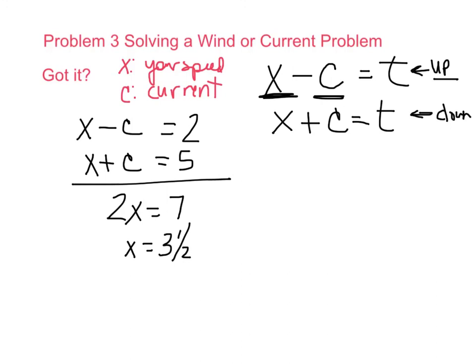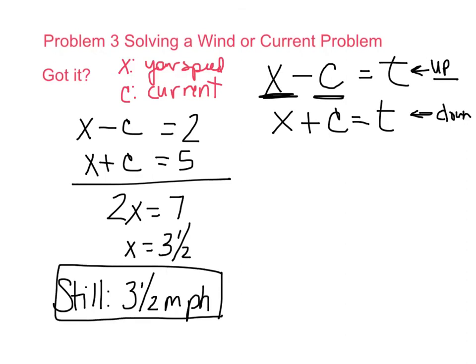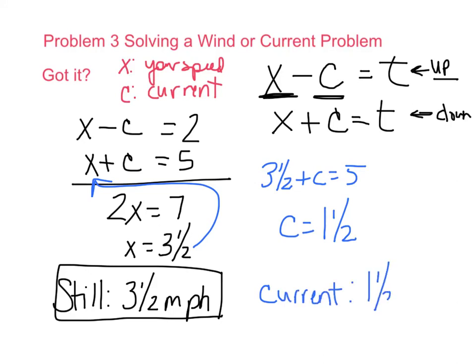So your X. So the first question says, what is your rowing speed in still water? Still water means with no current. You're going 3 and a half miles per hour. There's the first answer. That's your X. To find your C, we plug it in. So I don't care where you plug it in. I'm going to take it and plug it in right here. So 3 and a half plus C equals 5. You just take 5 minus 3 and a half. That means the current is going 1 and a half miles per hour. So the current, the speed of the water, is going 1 and a half miles per hour. And that's your answer.